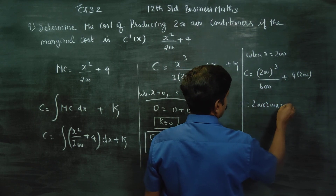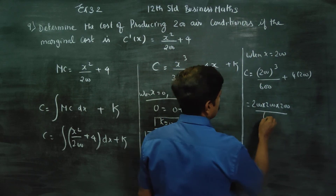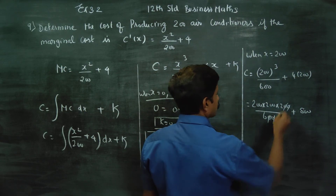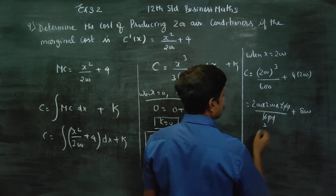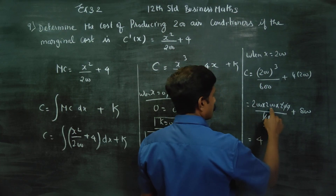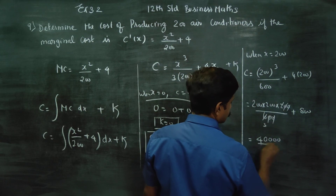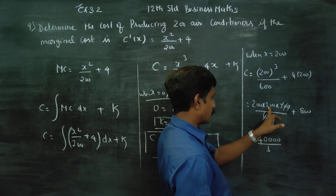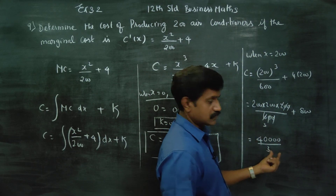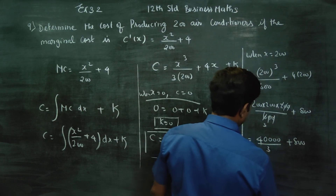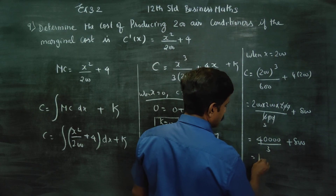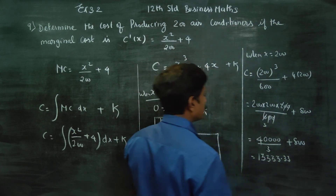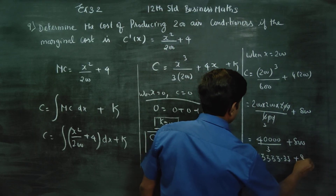Now, 200 cubed equals 8,000,000. Dividing by 600, we get 1333.333. Plus 4 times 200 equals 800. So the total is 1333.333 plus 800, which gives us 2133.333. You can see the result is 1333.333 plus 800.